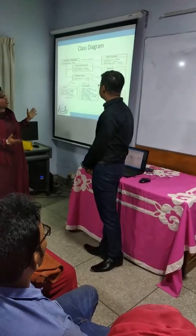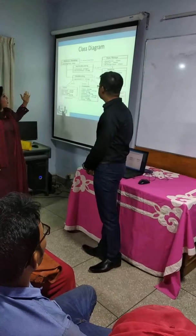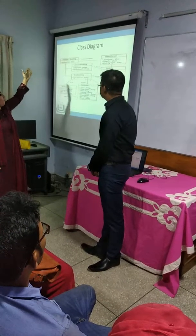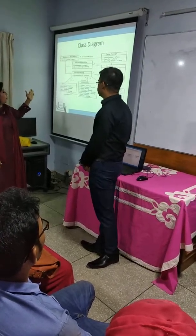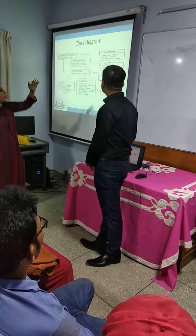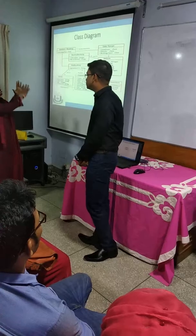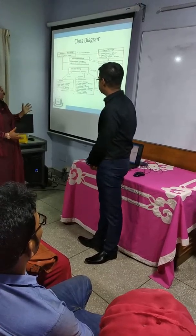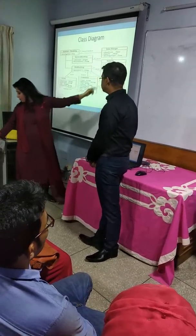Here we can see the class diagram. There are a few classes: Booking, Driver, Customer, Transaction, Vehicles, and Data Rate. Their required attributes are shown along with their values.